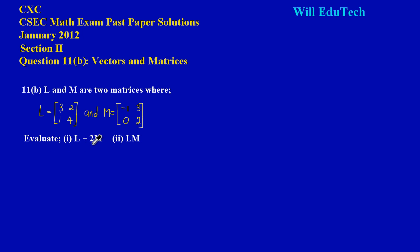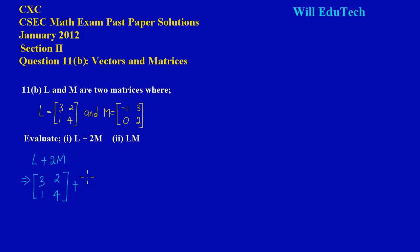In part 1 they're asking us to evaluate L plus 2M. All I'm going to be doing is substitute the matrices: L is 3 2 1 4, and I'm adding to that 2 times M. The matrix M is negative 1 3 0 2.